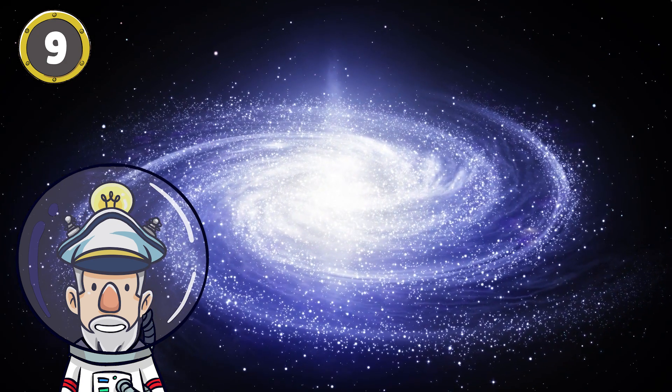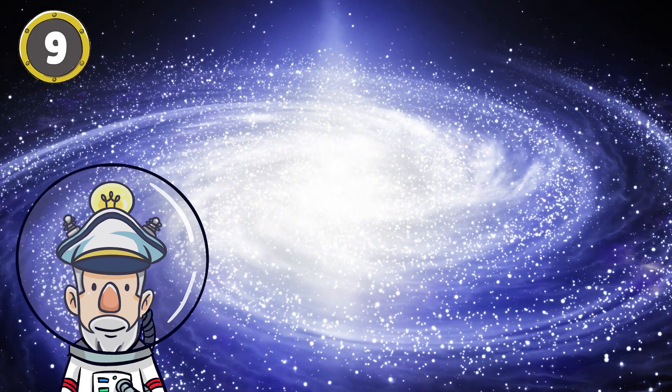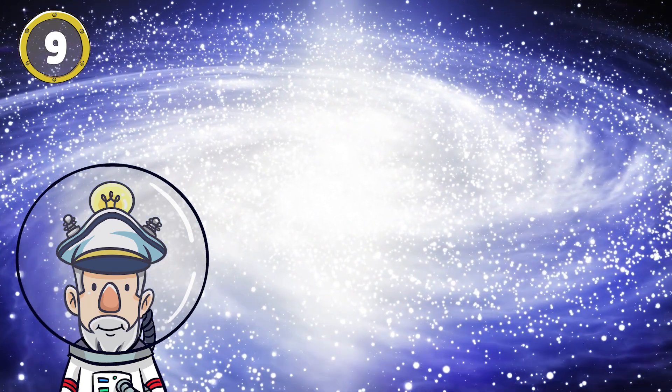Number 9: The black hole at the center of the Milky Way galaxy is called Sagittarius A. It's about 27,000 light years away from Earth.